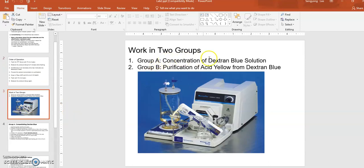You can do concentration operation of dextran blue solution or purification of acid yellow from dextran blue and acid yellow mixture. This is what your TFF unit looks like: a tank for initial material, the filter cassette, tubings connecting the tank and cassette, and a peristaltic pump that creates flow with pressure.